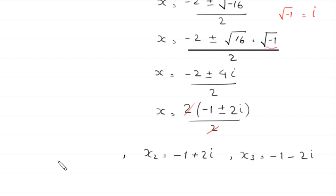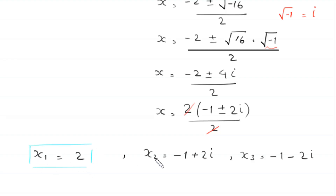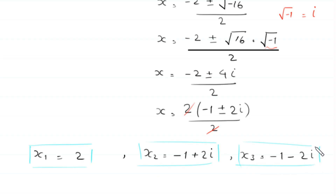And first we found that x1 is equal to 2. So we have 3 solutions of this equation: x1 is equal to 2, x2 is equal to negative 1 plus 2i, and x3 is equal to negative 1 minus 2i.